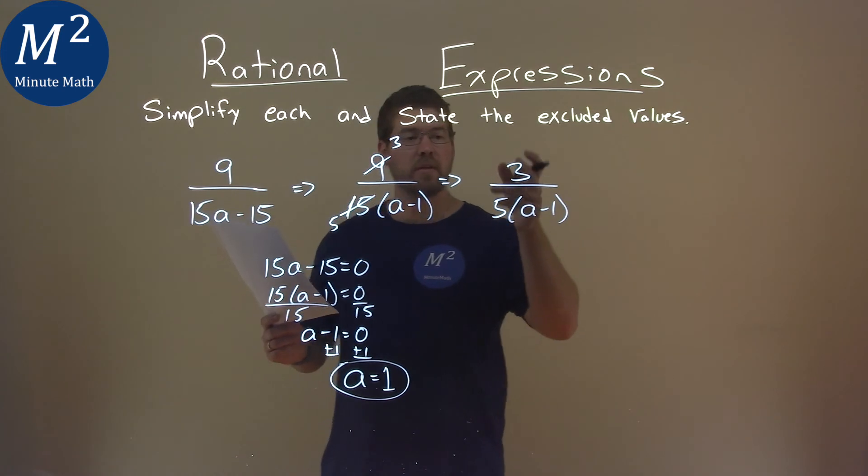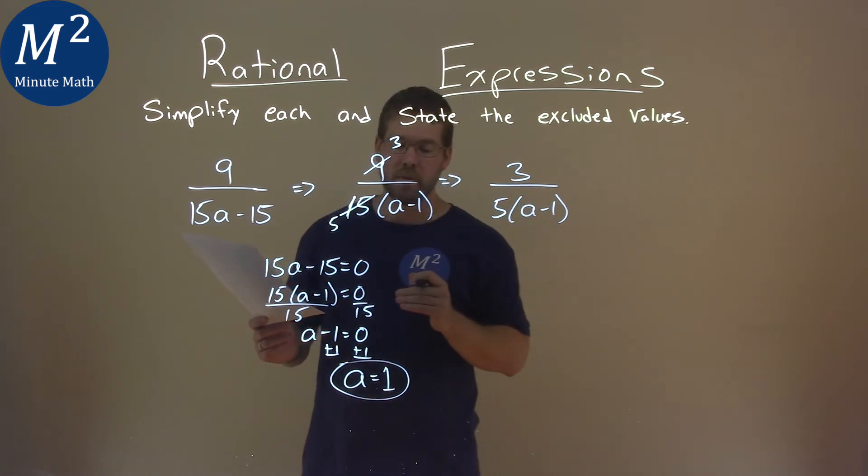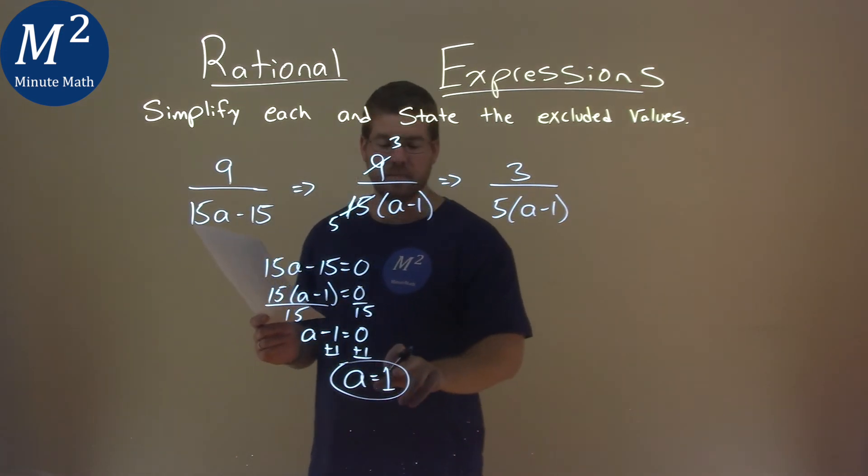So our final answer here is simplified, 3 over 5 times a minus 1, and our excluded value is 1.